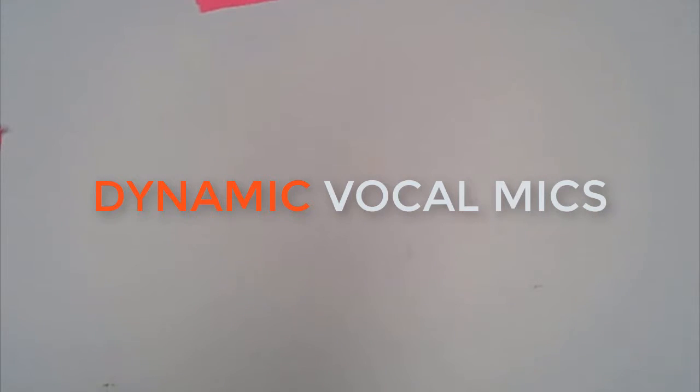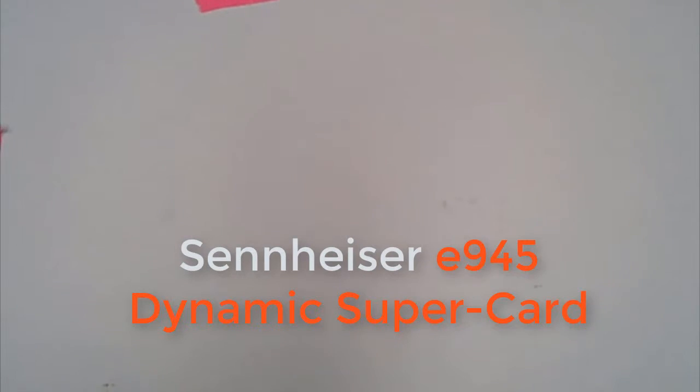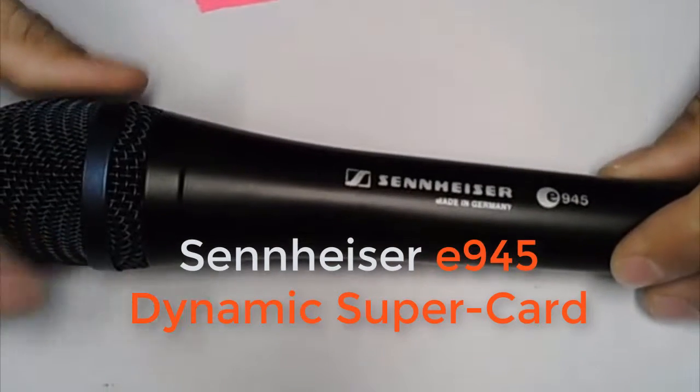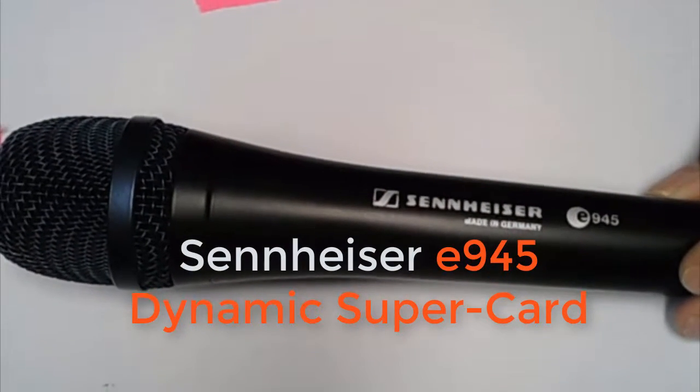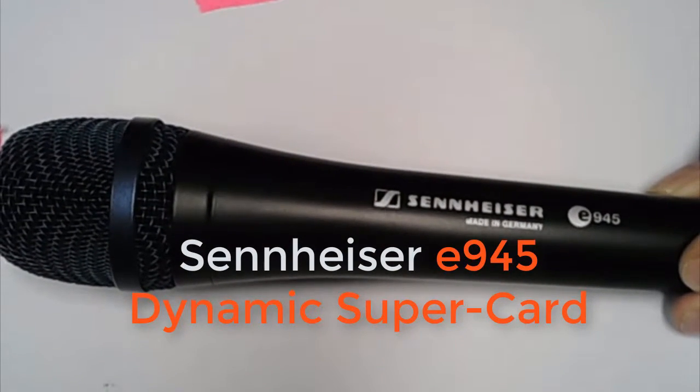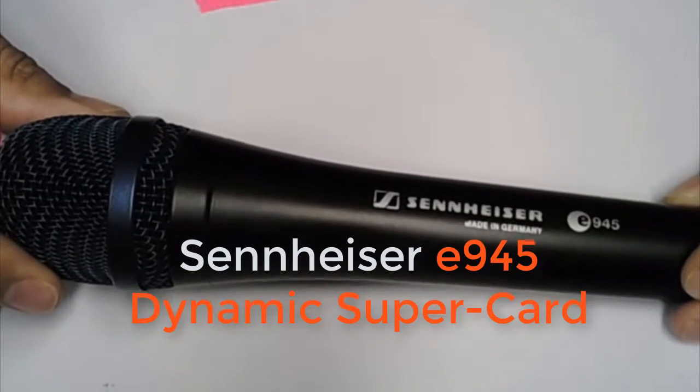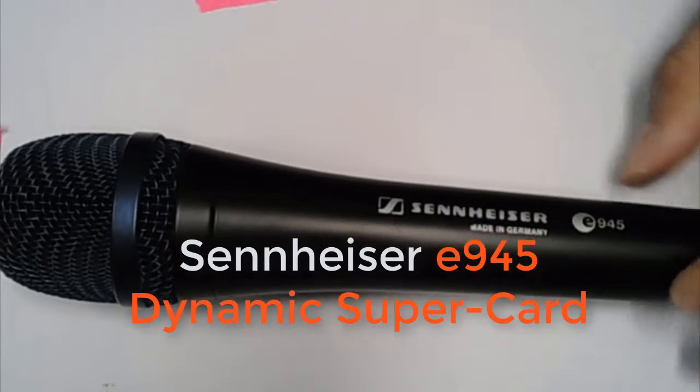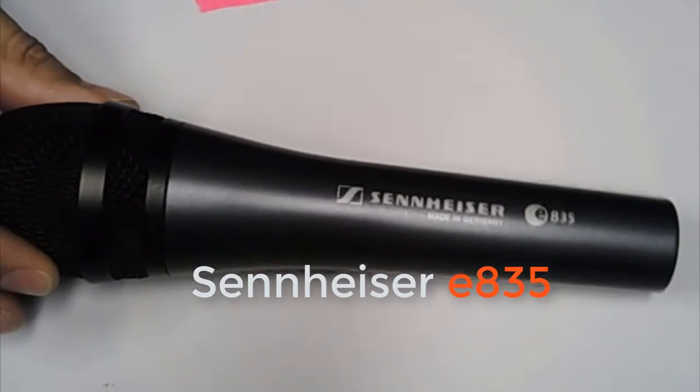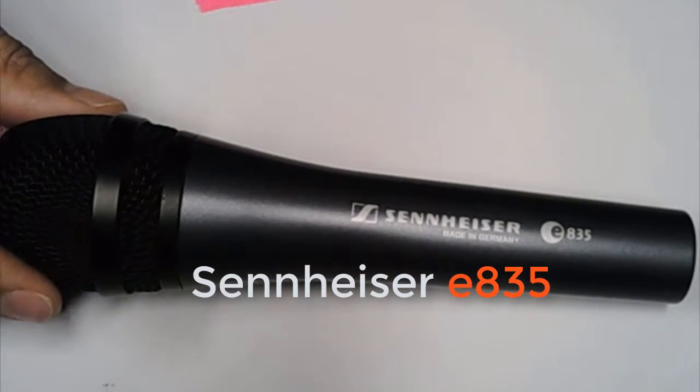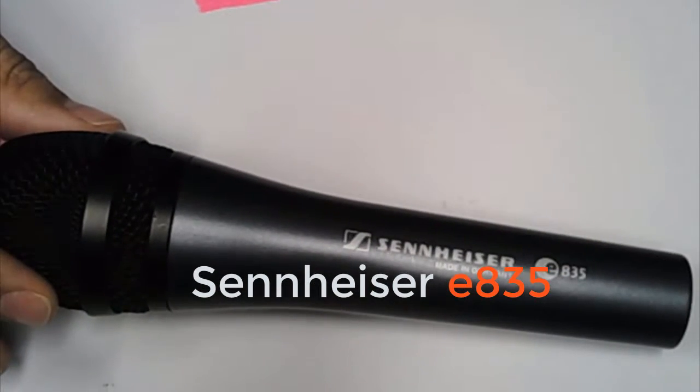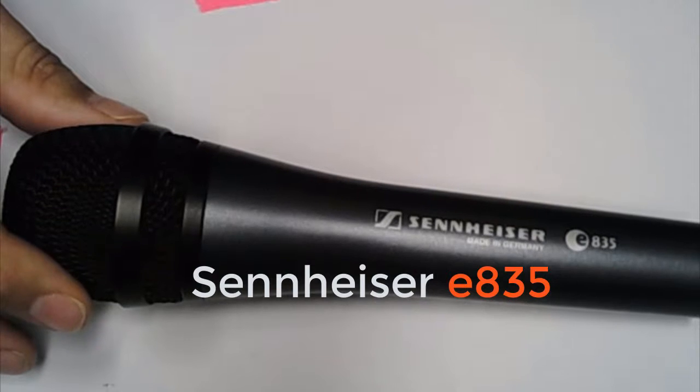Now, every company who produces anything has a competitor. Shure's competitor, for the most part is Sennheiser. This is Sennheiser's version of a Beta 58. This is a vocal, dynamic, super cardioid microphone. They actually sound very similar. Down into the cheaper series, very similar to the 945, this is 835. It's not as tough. There's not quite as much clarity in the high frequencies.